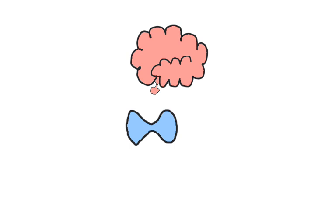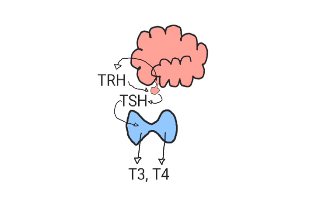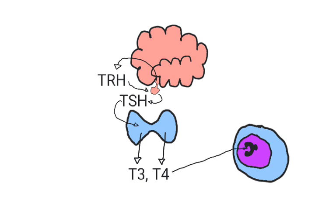For instance, the hypothalamus makes the hormone TRH, which tells the pituitary to make TSH, which tells the thyroid gland to make thyroid hormones. Thyroid hormones bind to thyroid hormone receptors, causing a number of different effects throughout the body.